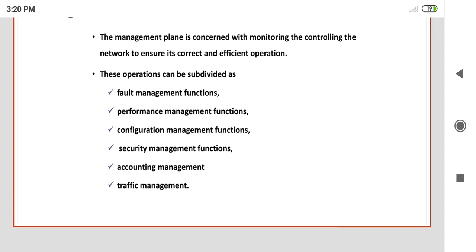The first operation is the fault management function. This addresses what type of faults are generated and how to manage those faults. Activities related to hardware specification, software specification, addressing, and interrelated network systems are all managed under fault management. Hardware and software components manage those particular faults through this function, which is one of the controls for the management plane.